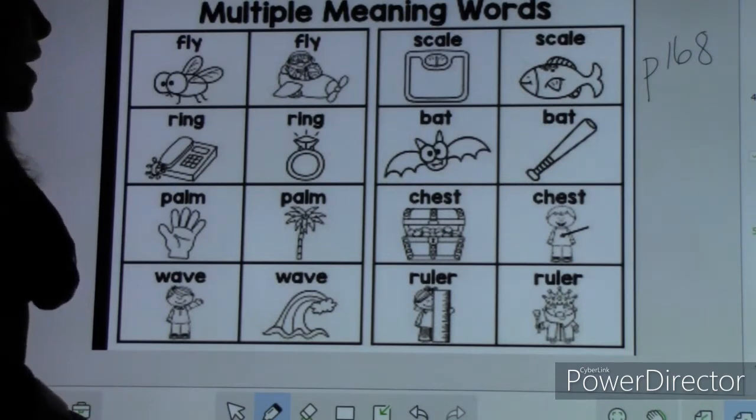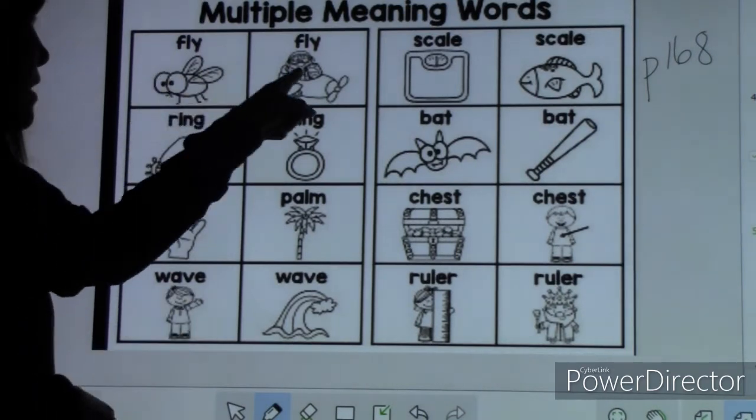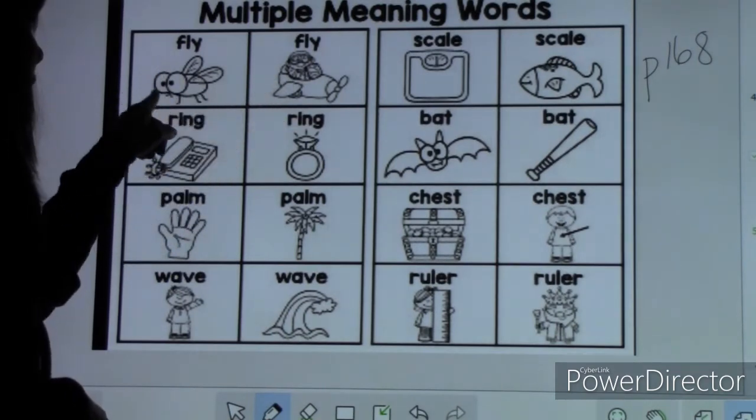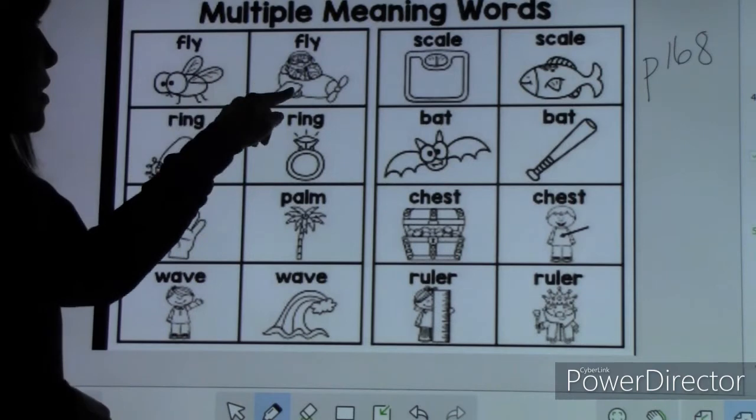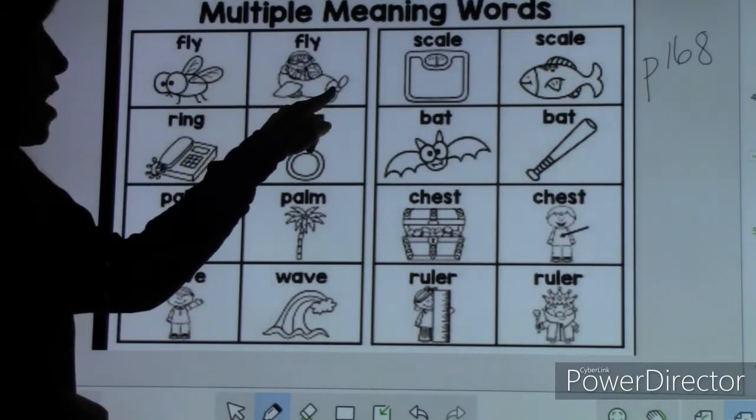The words we're looking at are ones like fly and fly. One can be the bug that flies around our room and sometimes bothers us. The other can be fly, like I'm going to fly an airplane.